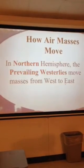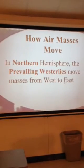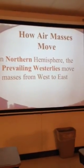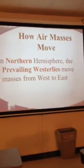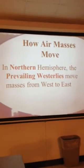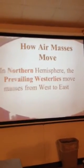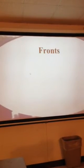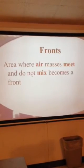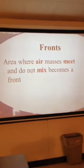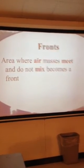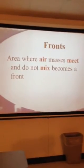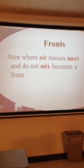In the northern hemisphere, the prevailing westerlies — one of the four types of global winds — move air masses from the west to the east. That is why they are called the westerlies, because they are coming from the west. A front is an area where two air masses meet and do not mix together, and that boundary becomes a front.